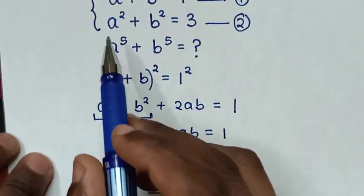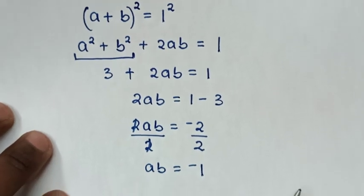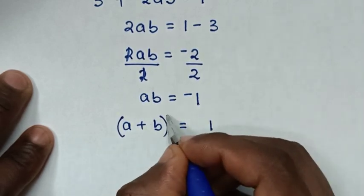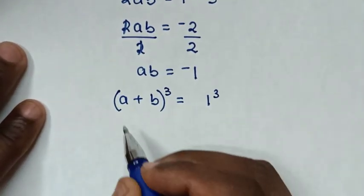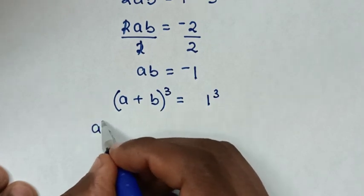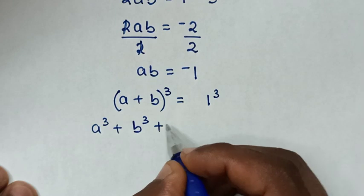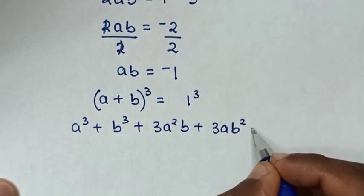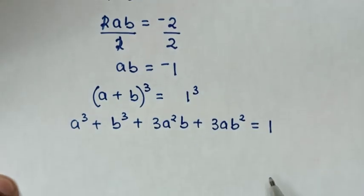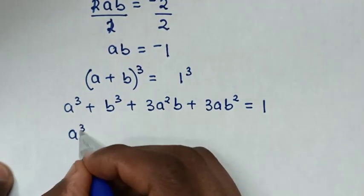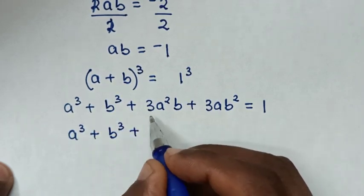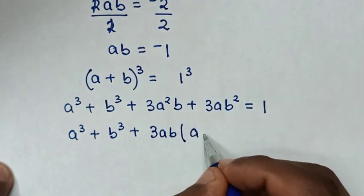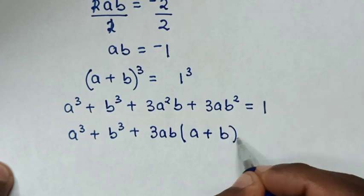In the next step, from equation 1, which is a plus b equals 1, we cube both sides. Expanding a plus b cubed gives a cubed plus b cubed plus 3ab times bracket a plus b bracket. Here 3ab is common, so we take 3ab out of the bracket, giving a plus b plus 3ab times bracket a plus b bracket equals 1.